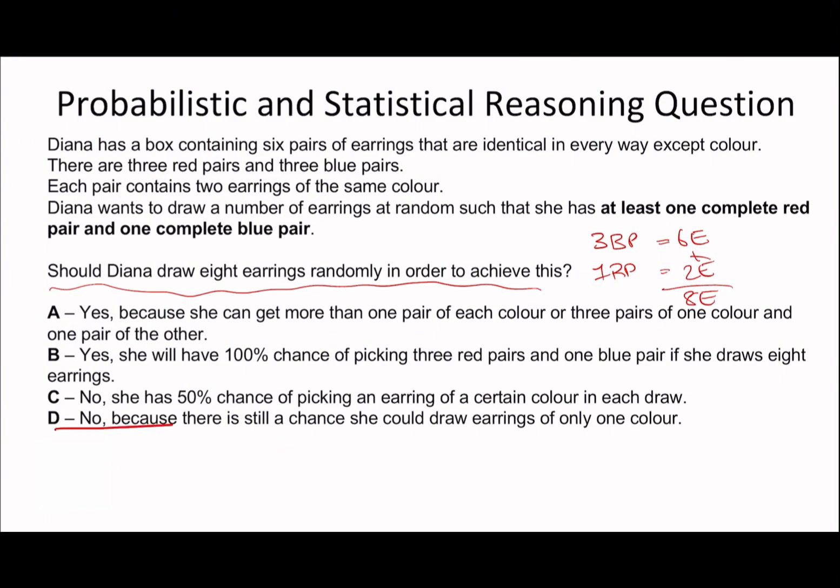So remember, we just tried to calculate the probability or like tried to calculate the working there. Let's have a look at A and B. B says she will have 100% chance of picking three red pairs and one blue pair if she draws eight earrings. Well, not necessarily. It could go the other way. So it's not B and A is right because she can get more than one pair of each colour. Yeah, she could end up with two and two or three pairs of one colour and one pair of the other. Exactly. So A is the correct answer there.